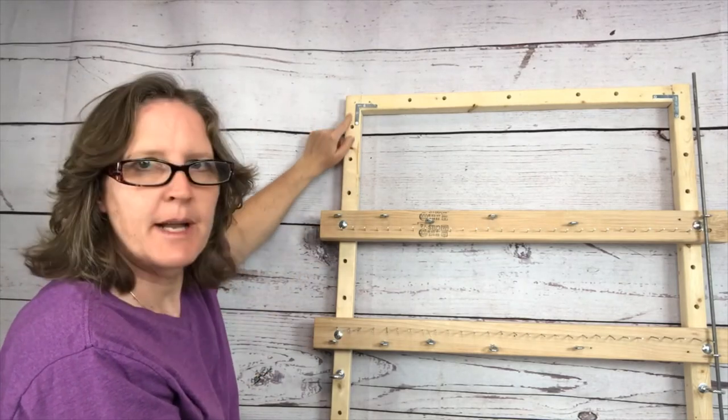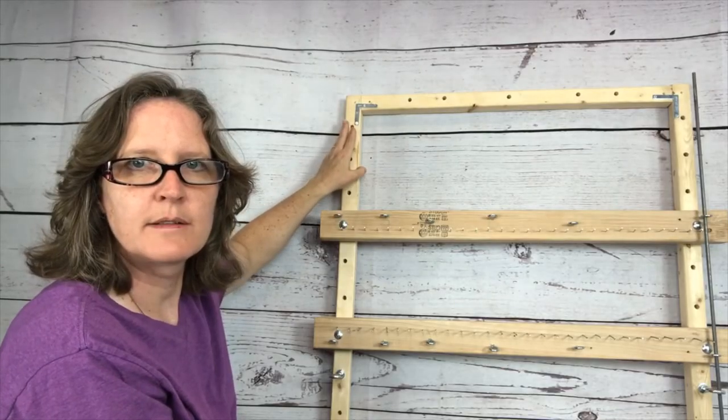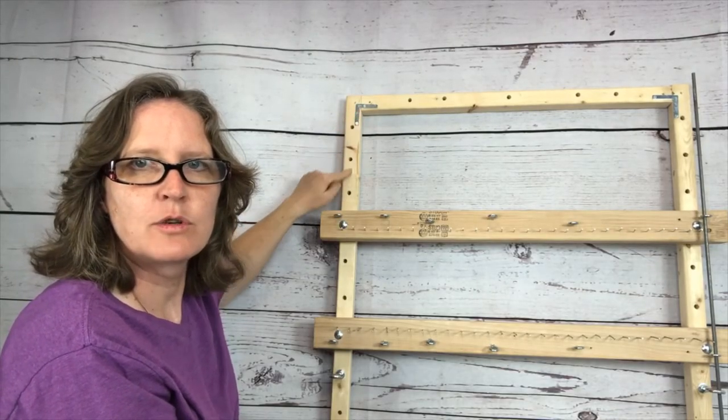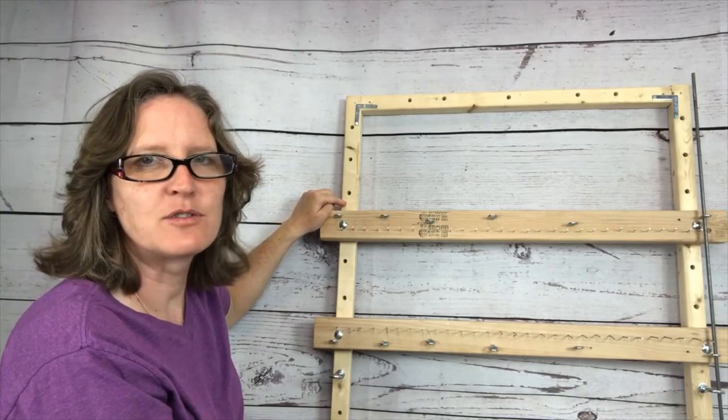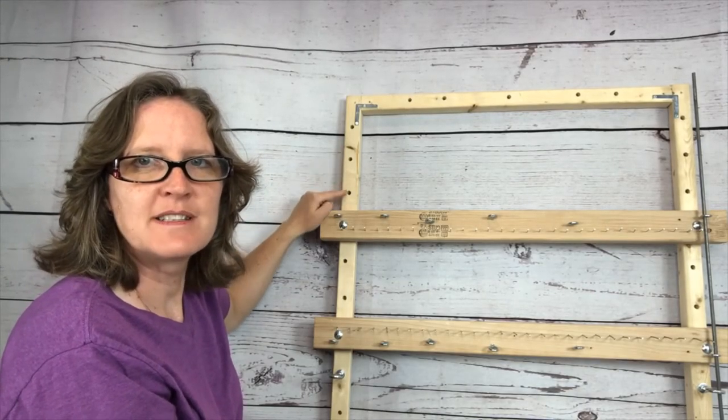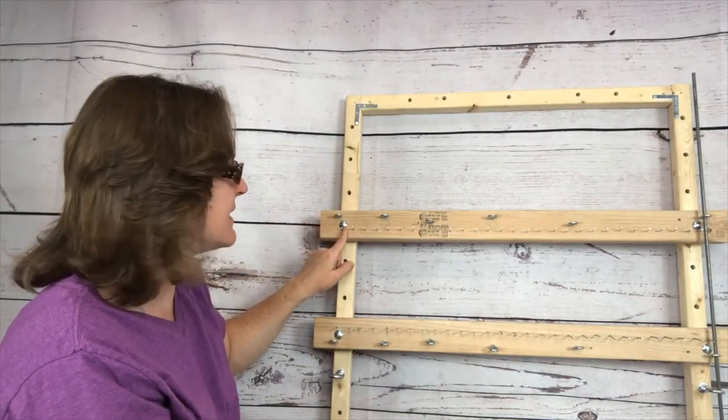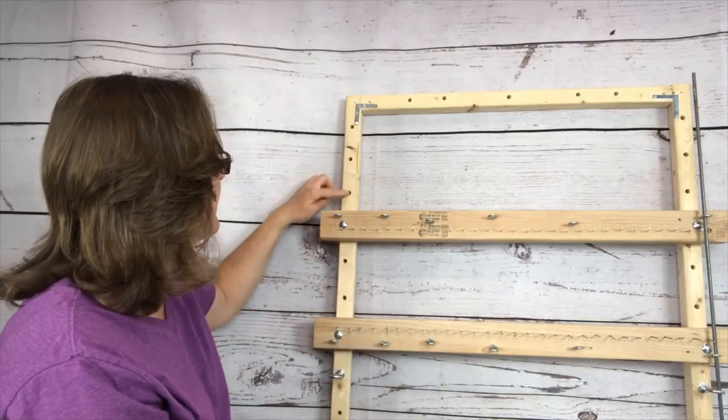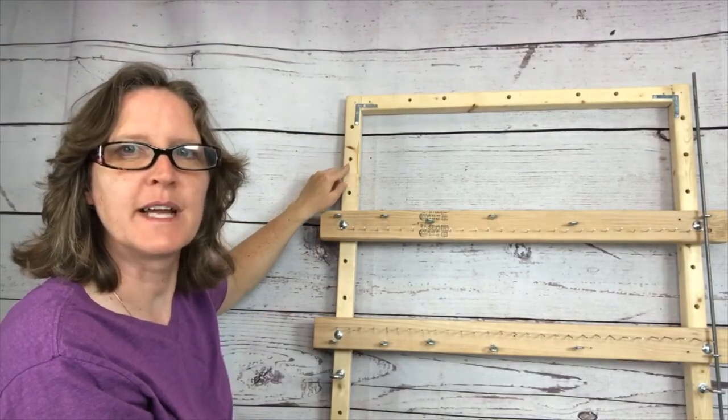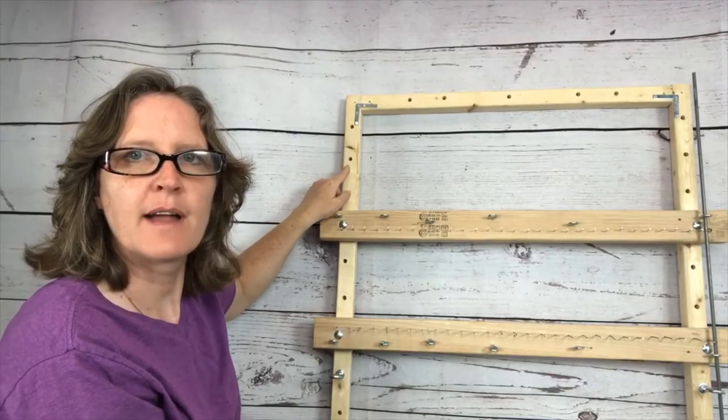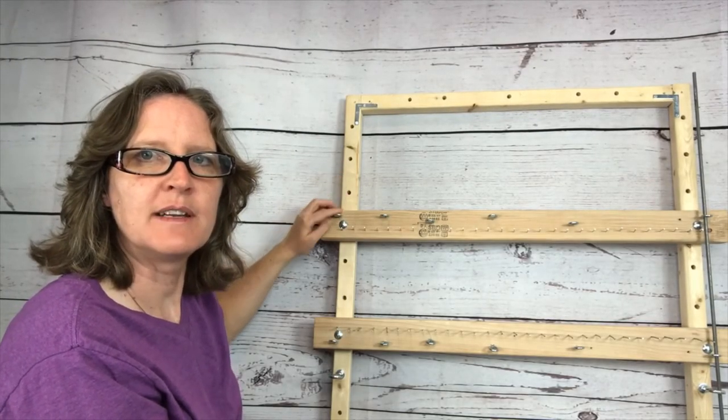So build your frame first to whatever height and width that you want. Then you can drill these holes in every three inches. It's nice if you have a drill press. I don't have a drill press so I just drill these in manually each one. The problem then was getting these to line up exactly because I'm not the best carpenter so these aren't all perfectly in the same spot.